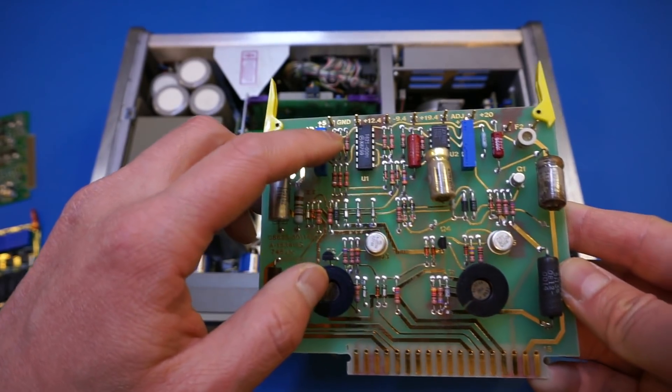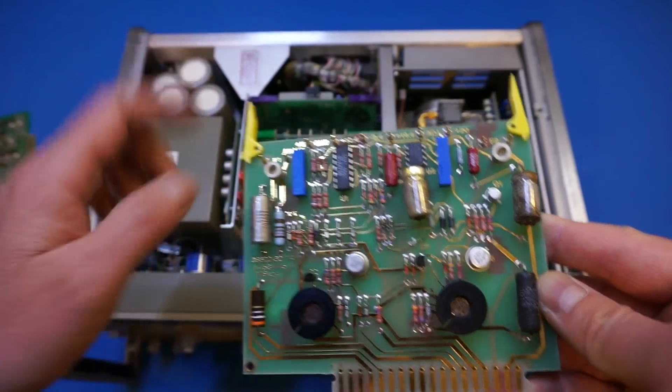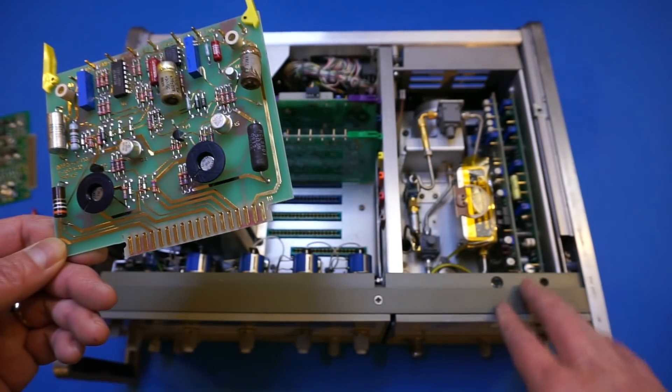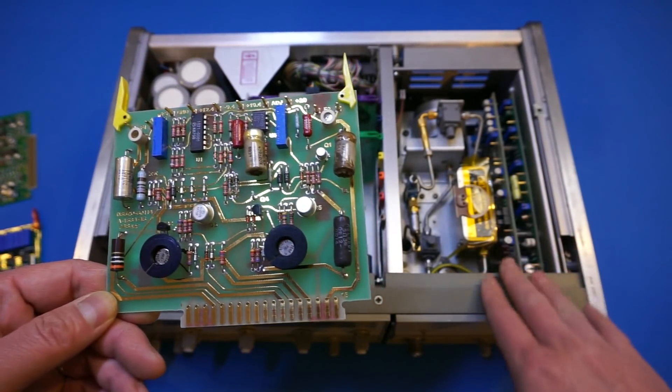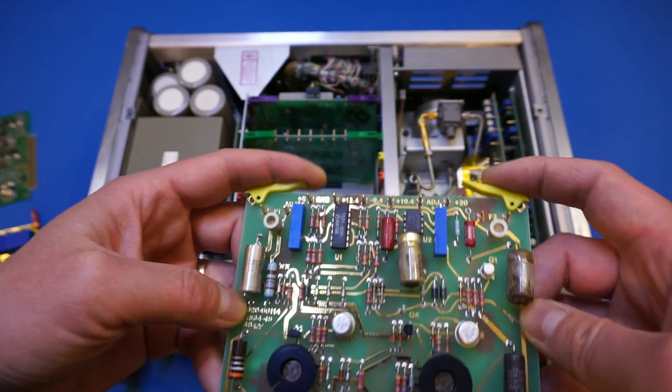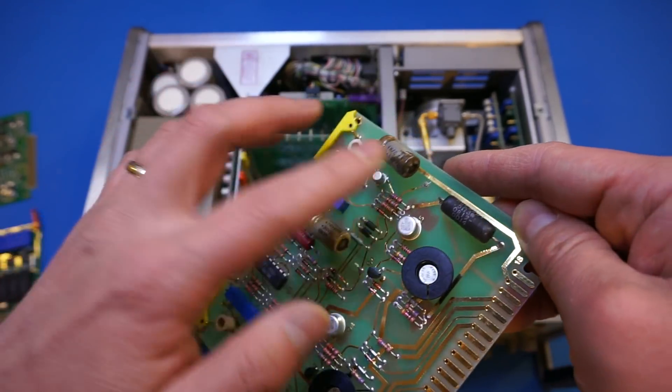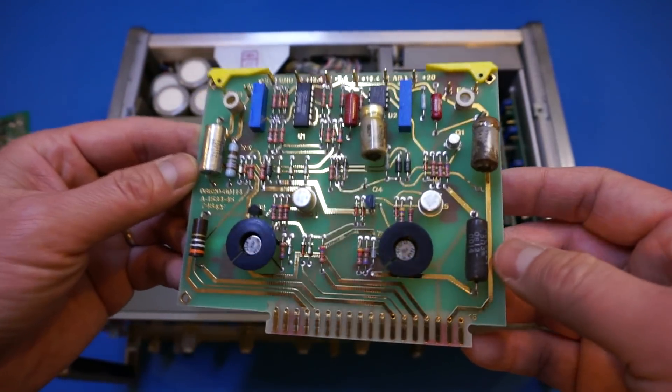So this is the power supply board providing the different voltages for the YIG oscillator on the plug-in up here and some other voltages.